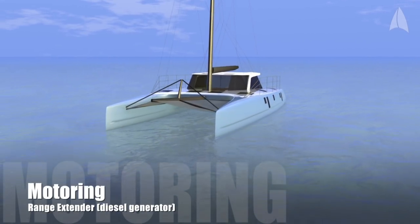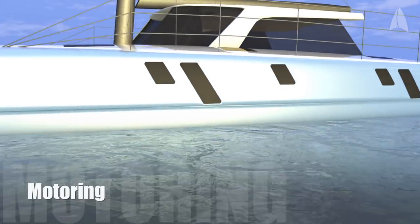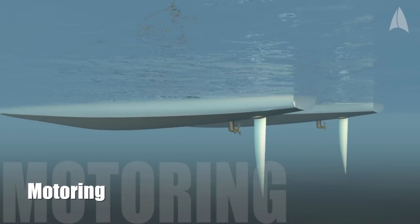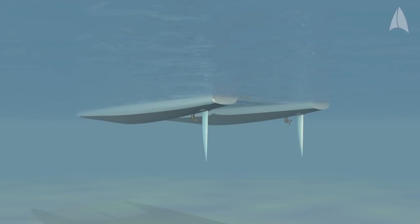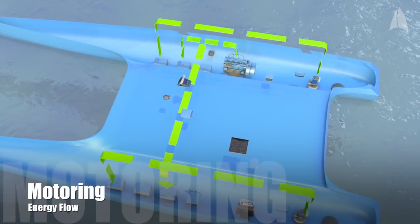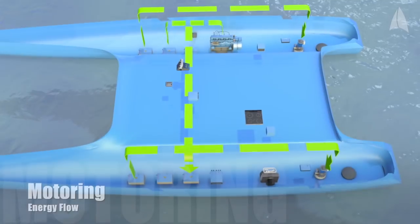Occasionally, there may be a need for extended motoring at full speed. In this case, the diesel generator will turn itself automatically to act as a range extender. It will recharge the batteries and provide electrical energy to the propulsion motors at the same time.